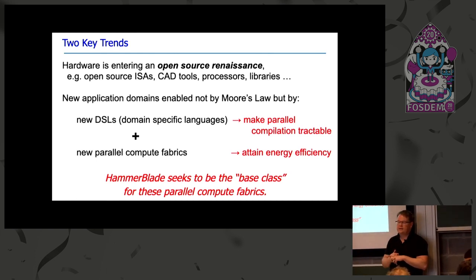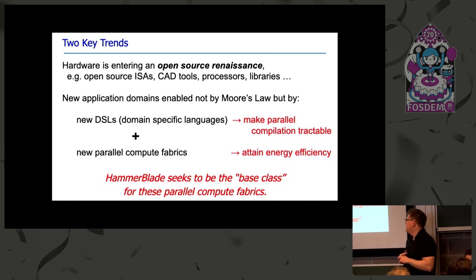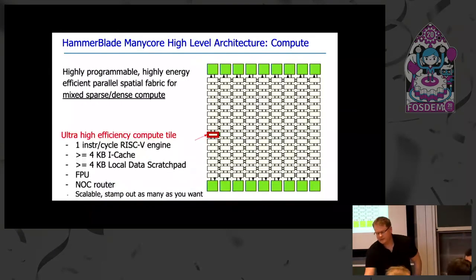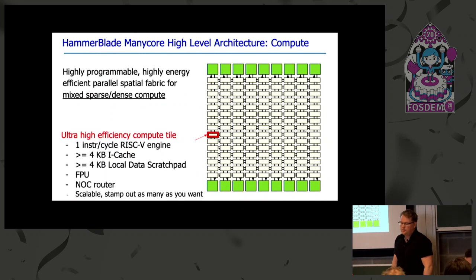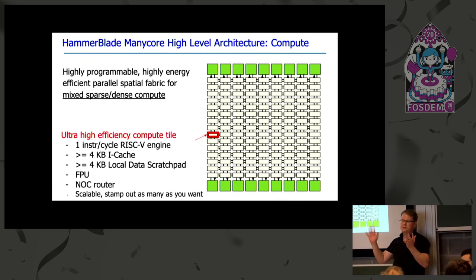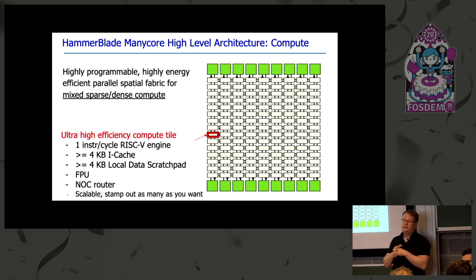Those are the things that are going to get us the energy efficiency we need in order to get high performance within a given thermal envelope. The HammerBlade ManyCore is seeking to be the base class of these parallel compute fabrics needed for new application domains. It's a highly programmable, highly energy efficient spatial fabric for mixed sparse-dense compute, addressing not just traditional GPU codes but also graph codes that are much more challenging to parallelize.